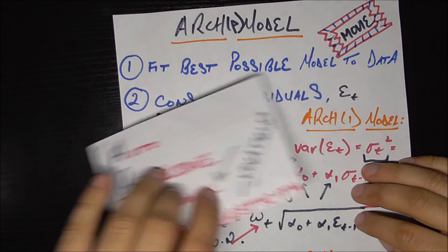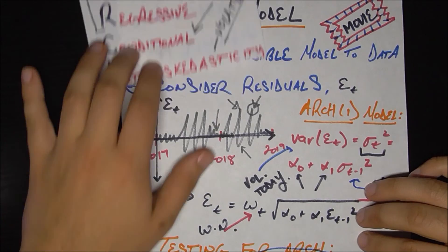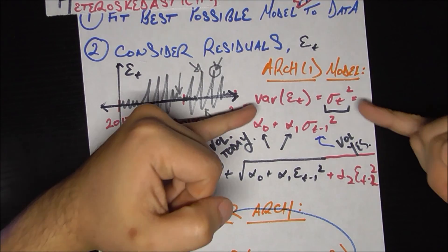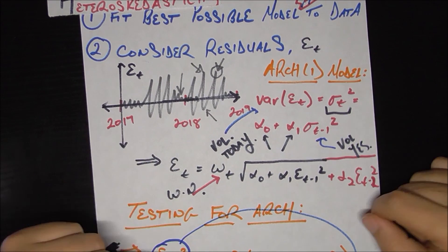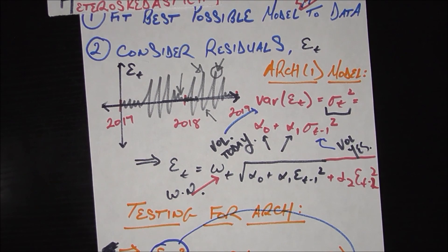So I hope that was a good introduction to the ARCH(1) process and the ARCH(P) process in general. And again, if you really have a burning desire to see going from this formulation, the variance formulation to the actual series, please put some comments below and I'll try to get to that as soon as I can. Okay, so until next time.